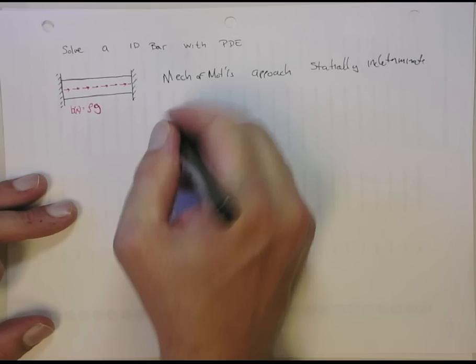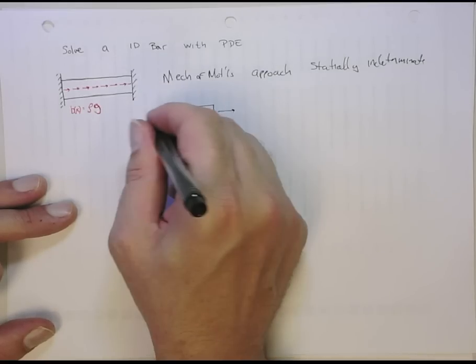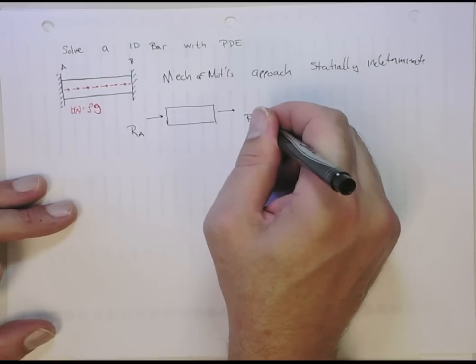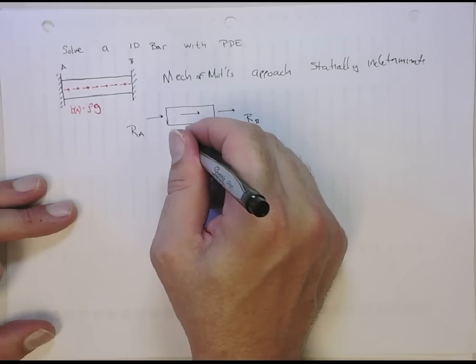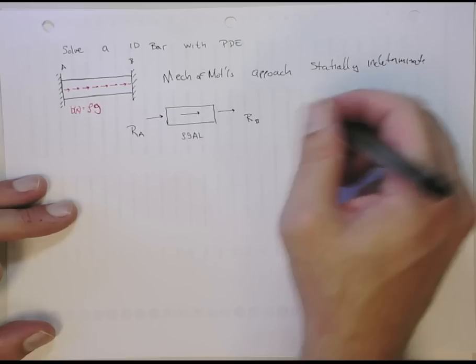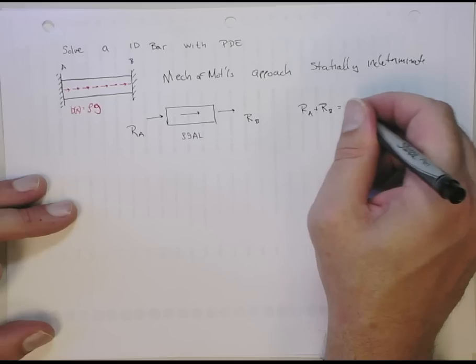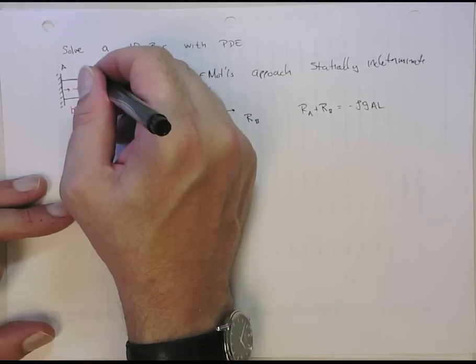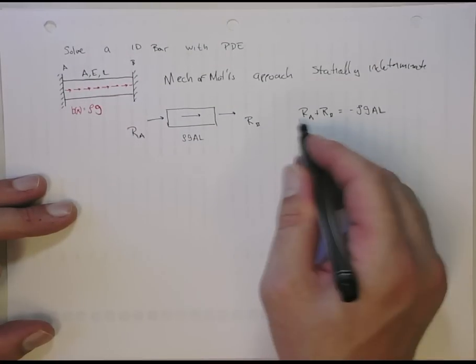So the way you solve for this, if you look at the free body diagram, you've got two reaction forces. Let's call this point A and point B. So we have a reaction at A, a reaction at B. You've got a net force on here of rho g A L. And if you do sum of forces, you're going to get RA plus RB equals minus rho g A L. L is the length of the beam, and it has a cross-sectional area of A. So it's A, has a stiffness E, and a length of L. So you can't uniquely solve for RA and RB.